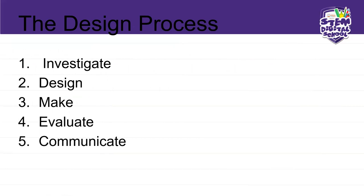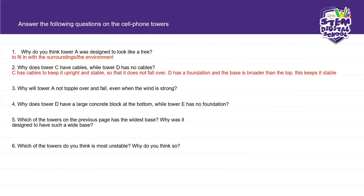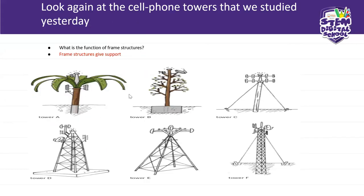Now, when you make projects, you undergo the design process. In another lesson I gave you an explanation of the design process. This is the design process: investigate, design, make, evaluate, and communicate. When you are investigating, you will be looking at the different kinds of towers that you can find.